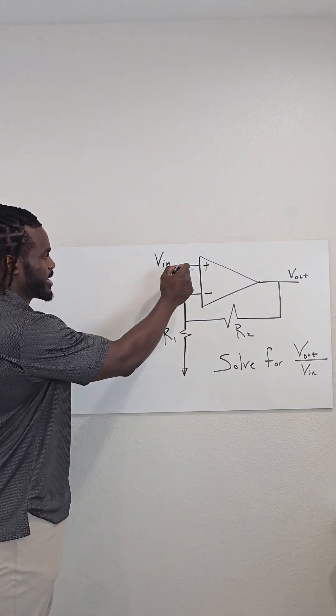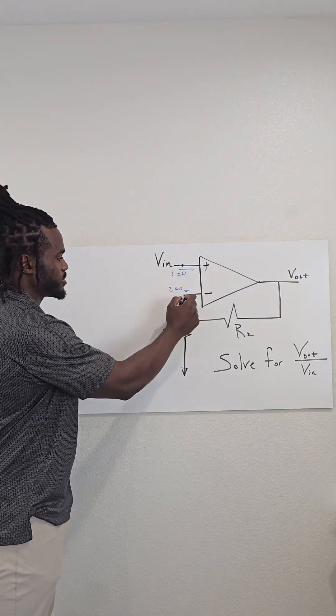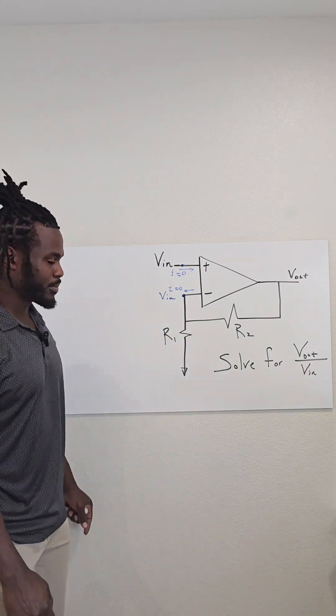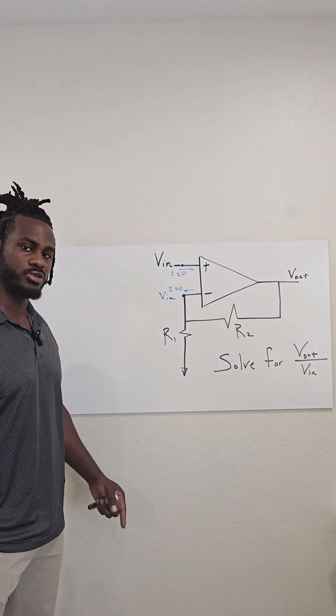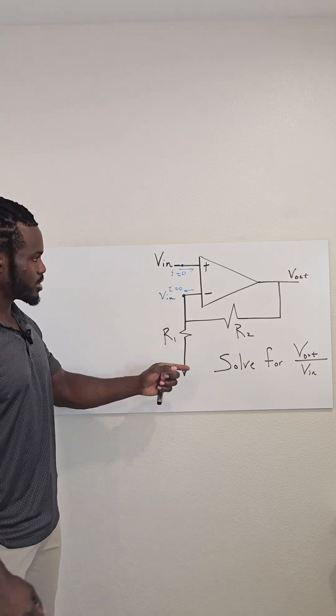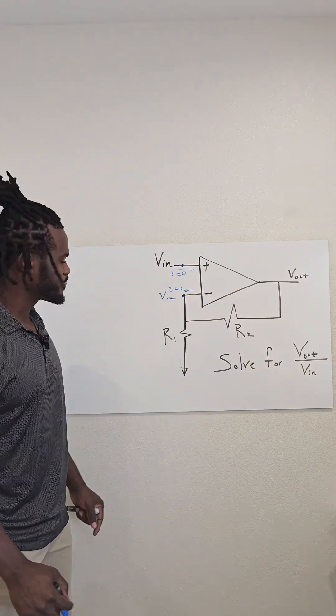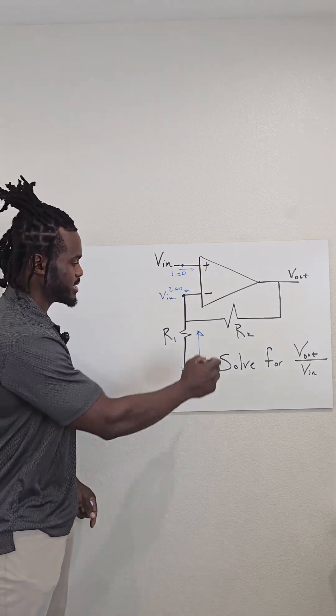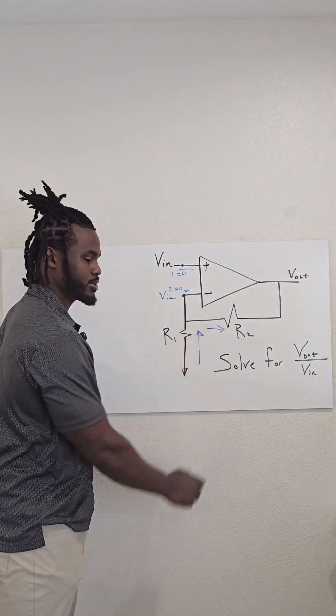So that means that my Vin here is also my Vin here. And what I'm going to do is use KCL, or Kirchhoff's current law, to solve for Vout over Vin. I'm going to say that the current that flows in here has to equal the current that flows out here.